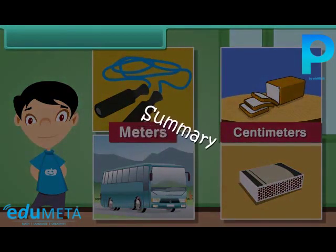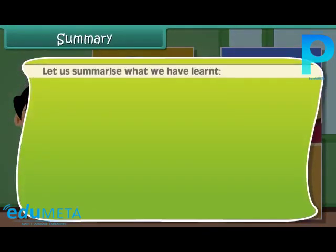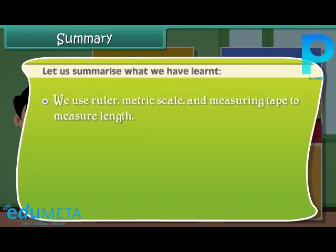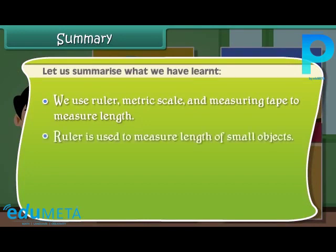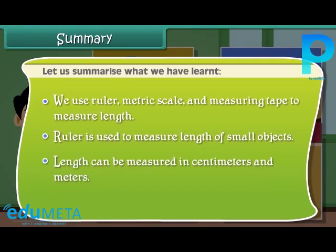Summary. Let us summarize what we have learned. We use ruler, metric scale and measuring tape to measure length. Ruler is used to measure length of small objects. Length can be measured in centimeters and meters. 1 meter is equal to 100 centimeter.